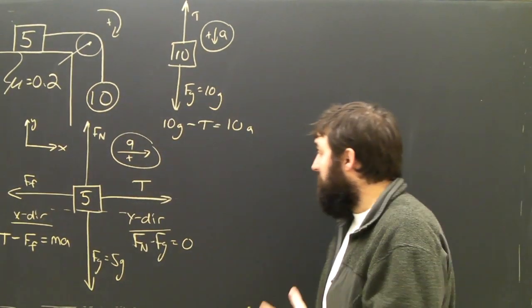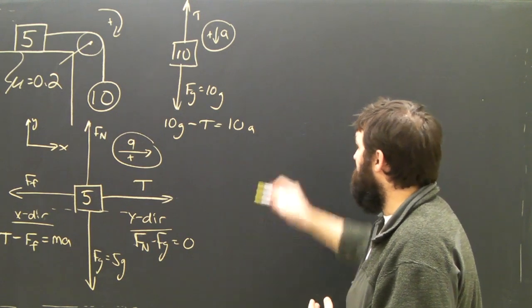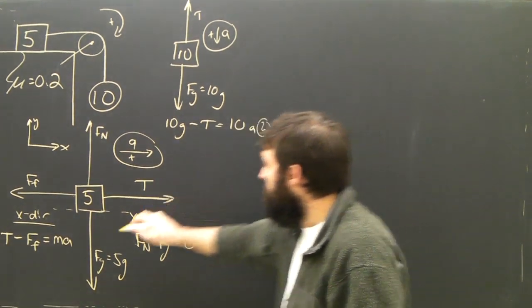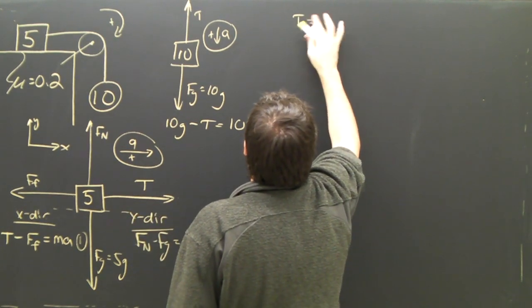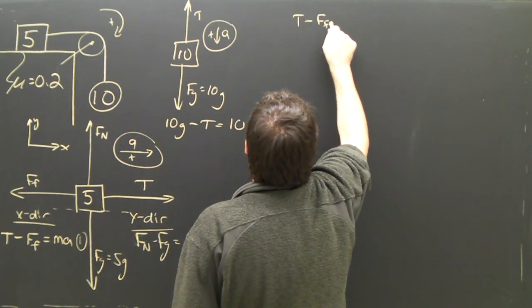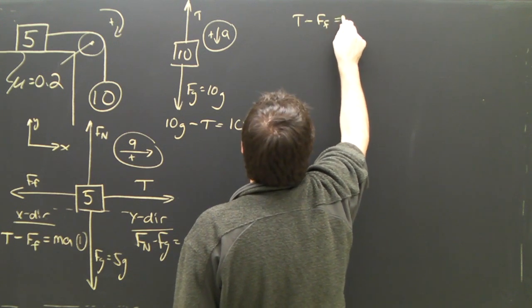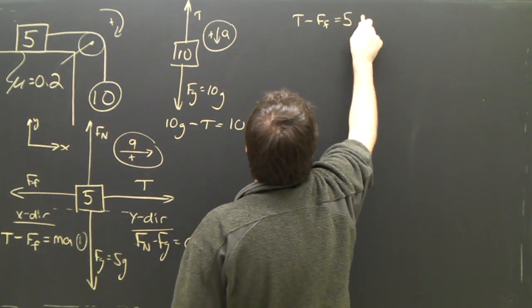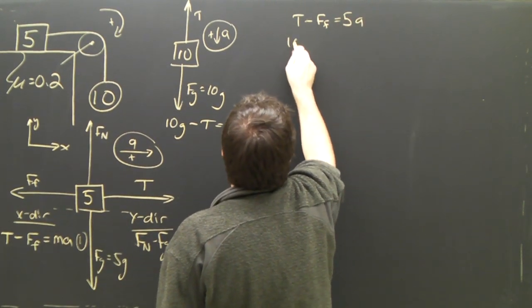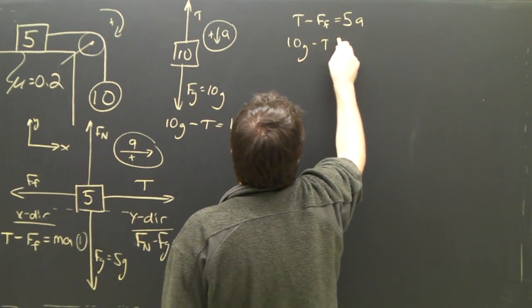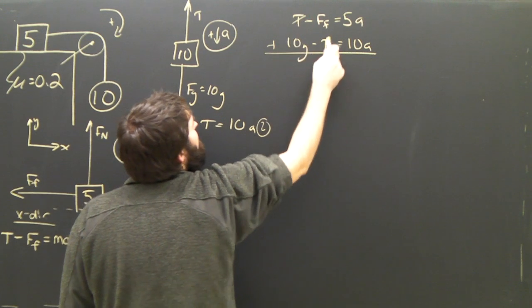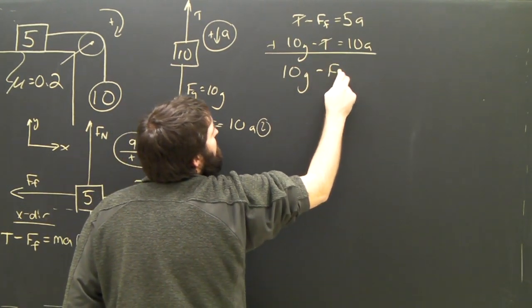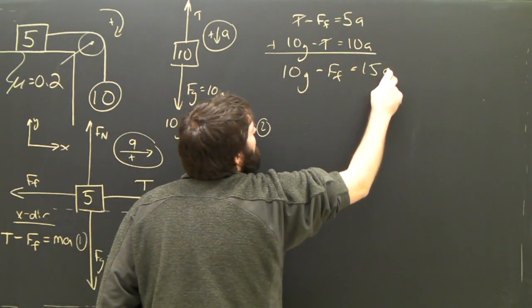I have to take equation 1 and 2 and add them together. Equation 1 is T minus FF equals 5a. And equation 2 says 10g minus T equals 10a. And if I add those together, my T's are gone. I get 10g minus the force of friction equals 15a.